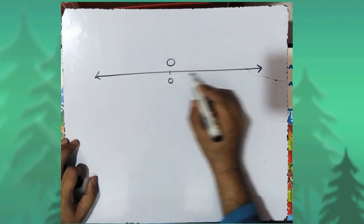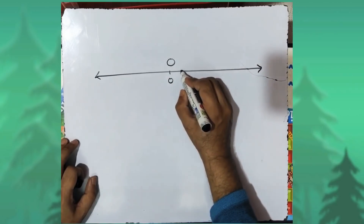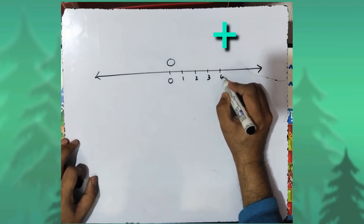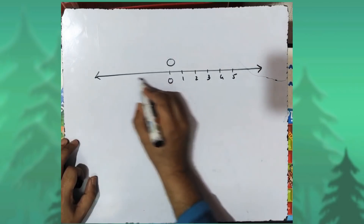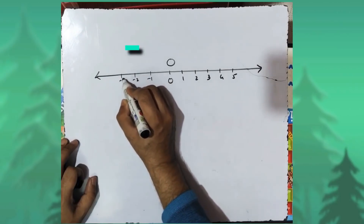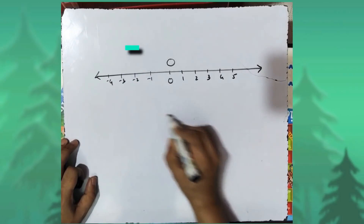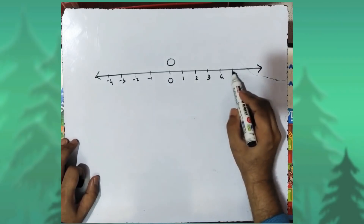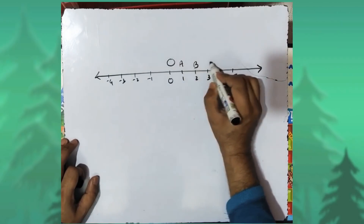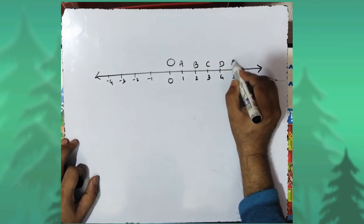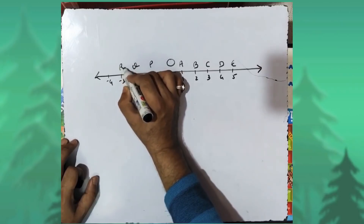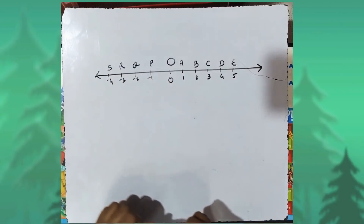On the right-hand side we have positive coordinates: one, two, three, four, five. On the left side we have negative coordinates: minus one, minus two, minus three, minus four. For each of these points, let us name them. On the right side the points are A, B, C, D, E, and on the left side P, Q, R and S.